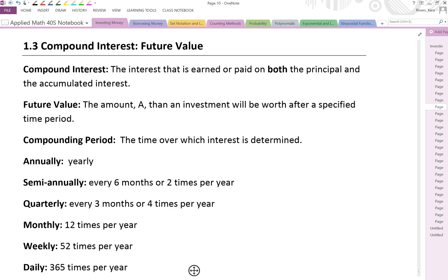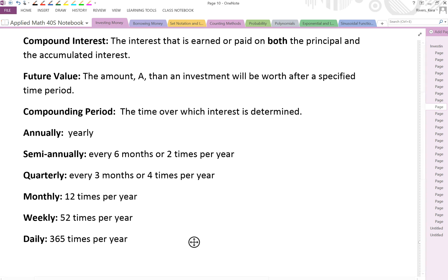So we've got some terminology here at the beginning. Compound interest is the interest that is earned or paid on both the principal and the accumulated interest. So you put in your initial lump sum, your principal, and you're going to gain interest on that. But as you earn money, that interest is going to get put back in as if it was the principal and then you're going to earn interest on that total value. So the future values that are accumulated are going to accrue interest as well.